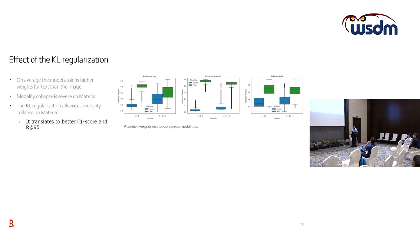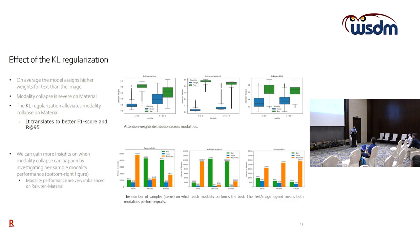On the effect of the KL regularization, we report the distribution of attention weights per dataset. For each figure, the left box plots show results with the regularization parameter lambda set to zero — meaning no regularization — and the right shows results with lambda set to a value determined on the validation set. On the material dataset, modality collapse is quite severe, with the image component receiving much higher weights close to one. Using KL regularization alleviates this problem and also translates to better performance in practice.